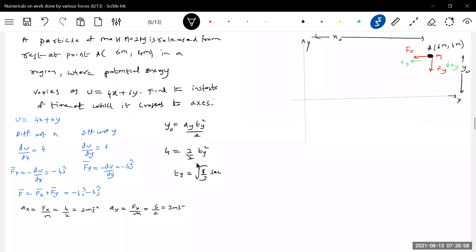For the time to cross the x-axis: x₀ = (1/2)ax·tx². Where x₀ = 6 and ax = 2.